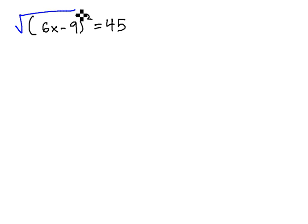Again, to get rid of the squared, we'll take a square root of both sides, because the opposite of square is square root, leaving us with 6x minus 9 on the left side.